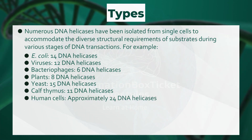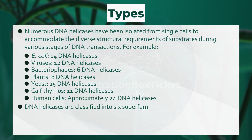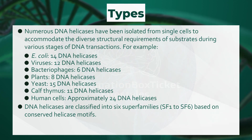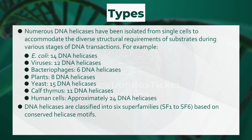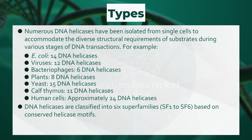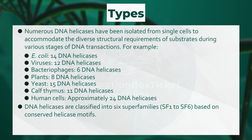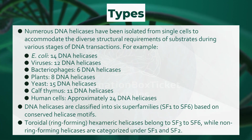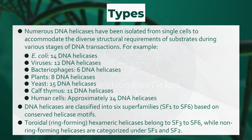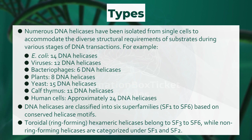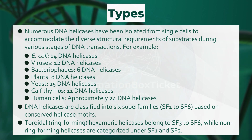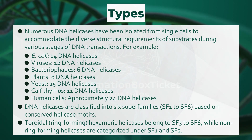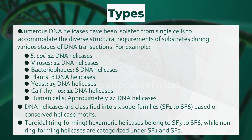DNA helicases are classified into six superfamilies, SF1 to SF6, based on conserved helicase motifs. Toroidal, ring-forming hexameric helicases belong to SF3 to SF6, while non-ring-forming helicases are categorized under SF1 and SF2. Ring-forming helicases encircle DNA and translocate in a processive manner.